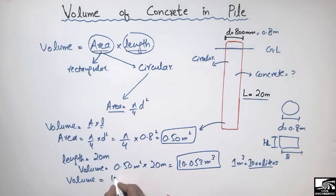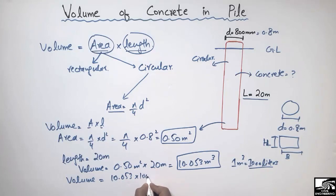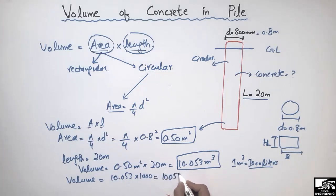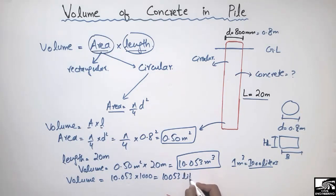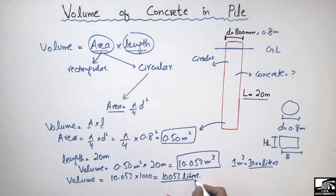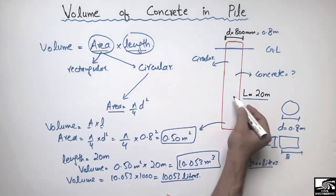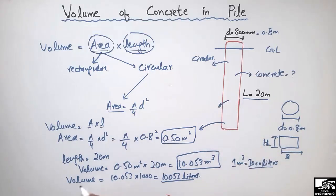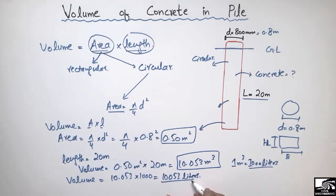Multiplying 10.053 by 1000, we get 10,053 liters. So this amount of liters of concrete should be placed in this pile. We found the volume of concrete in a single pile, which is 10,053 liters.